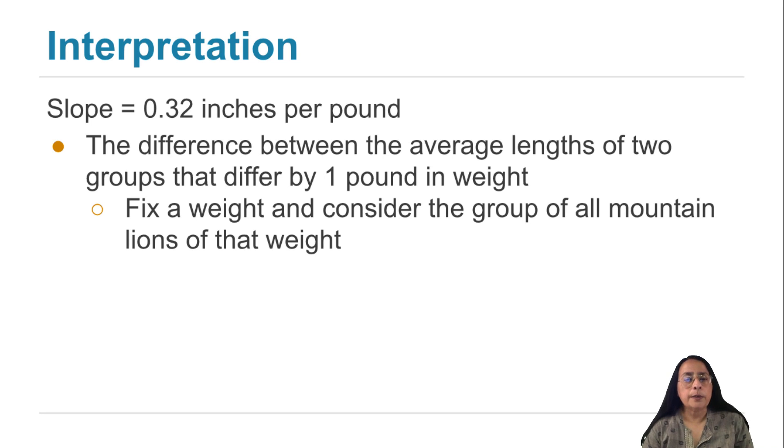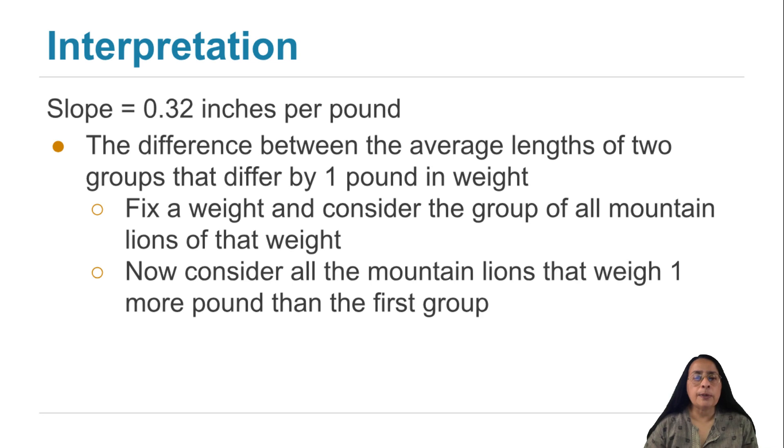fix any weight you want of mountain lions and consider the group of all the mountain lions of that weight. And now consider all the mountain lions that weigh one pound more. So you have two vertical strips, one at some weight that you decided, and one at the weight that is one pound to the right.